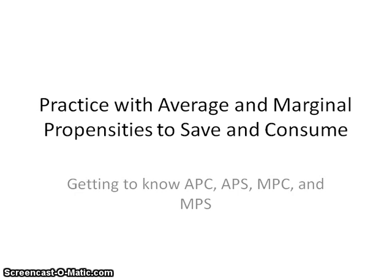Hi folks. In today's video, we're going to go over concepts and calculations involving average and marginal propensities to save and consume. These are fancy terms for the likelihood, or propensity, that we'll either save income or consume income. If we're talking about additional pieces of income, then we're talking about marginal concepts. If we're talking about absolute income and that ratio, then we're talking about average propensities. By the end of the video, you'll know acronyms like APC, APS, MPC, and MPS — concepts that tend to throw AP students off on their macro examination. But the concepts aren't extremely difficult, and the calculations are pretty simple. Let's get started.